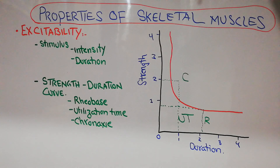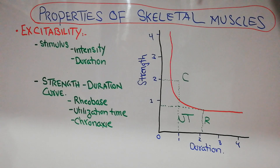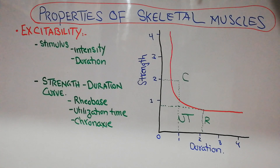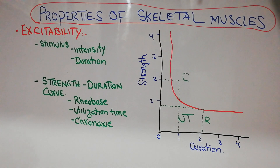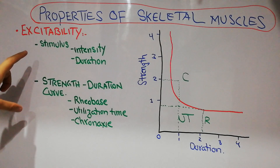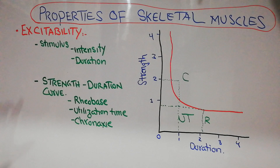In this lecture we are going to discuss the properties of skeletal muscles. We have already discussed the structure and function of skeletal muscles, from their gross morphology to the molecular level — how they contract and what the molecular basis of their contraction is. Now we need to discuss some of the properties of skeletal muscles further.